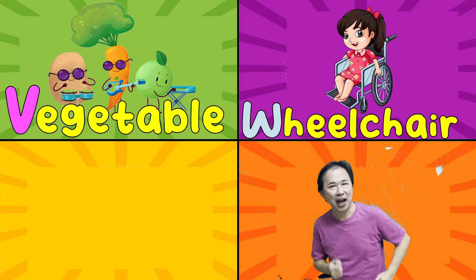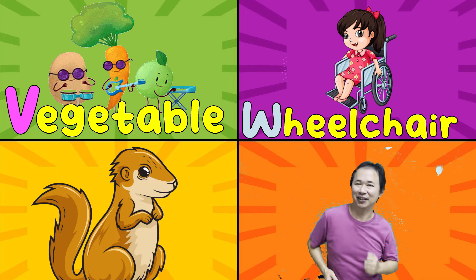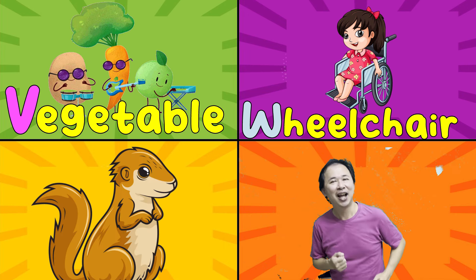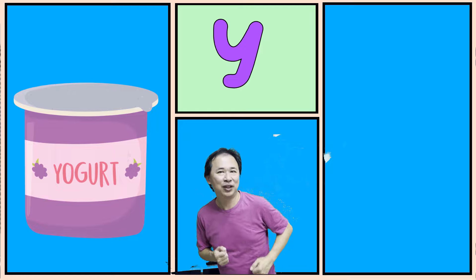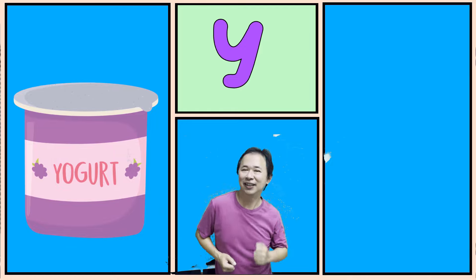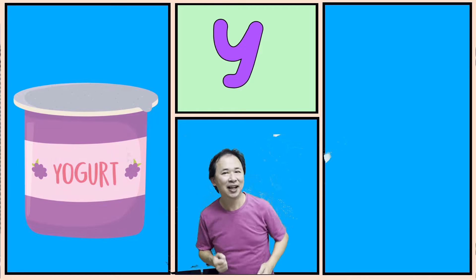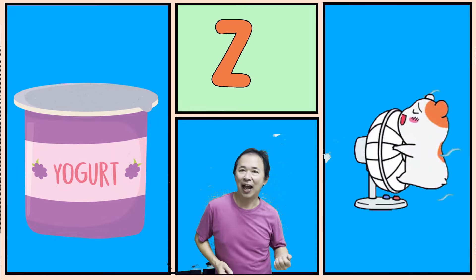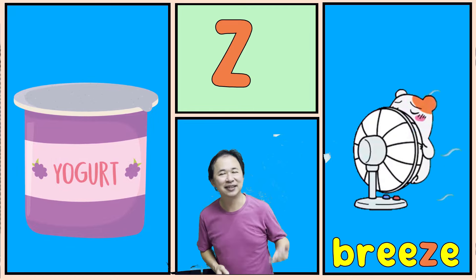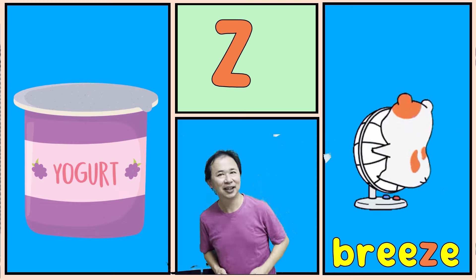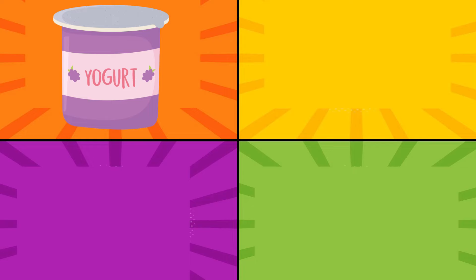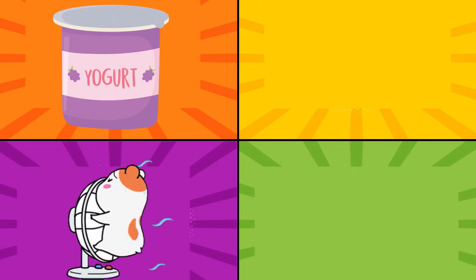Vegetable, wheelchair, xylophone. Y is for yogurt. Y, Y, Y. Z as in breeze. Z, Z, Z. Yogurt, breeze.